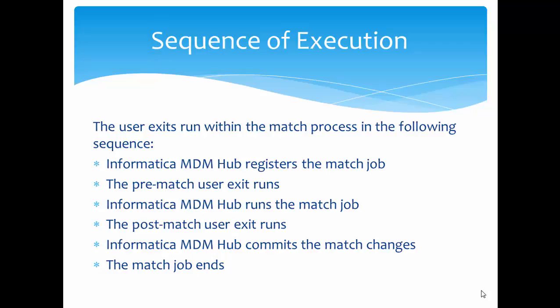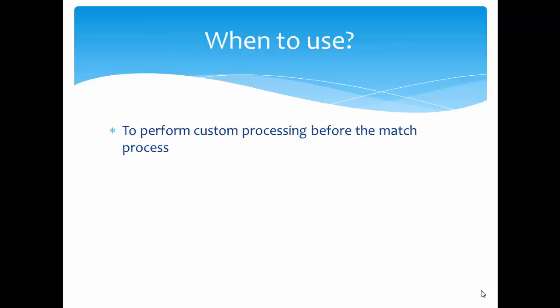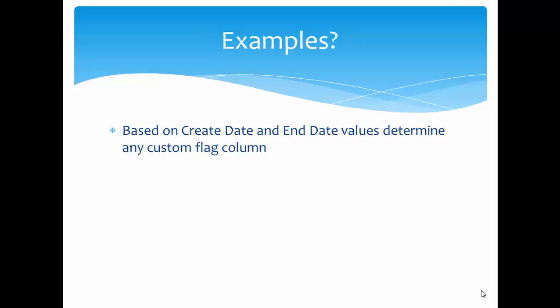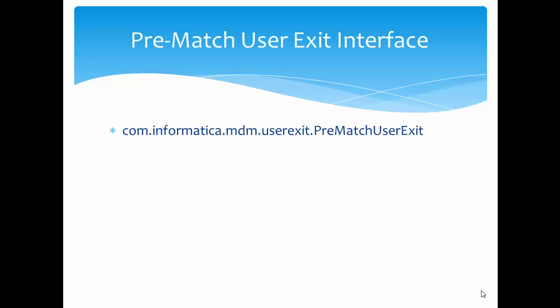This is the sequence of execution of the match job along with user exits. When to use the pre-match user exit: to perform custom processing before the match job, we can use a pre-match user exit. For example, suppose we have a create date and an end date for a record. Based on those dates, we can populate a custom flag indicating whether the record is active or deactivated. This is one example where we can use the pre-match user exit to populate a custom flag column.